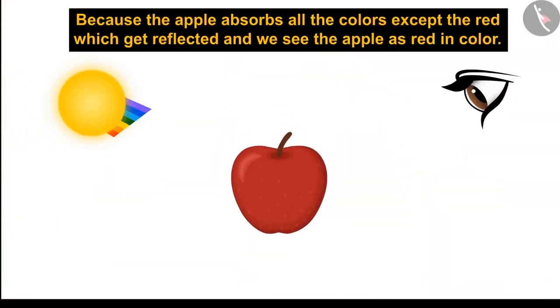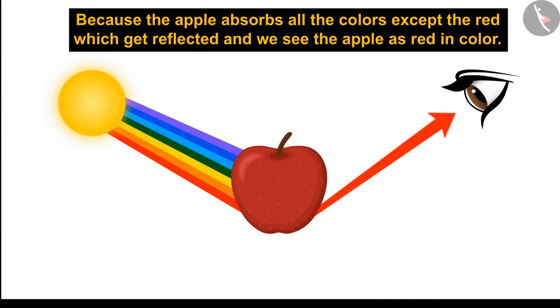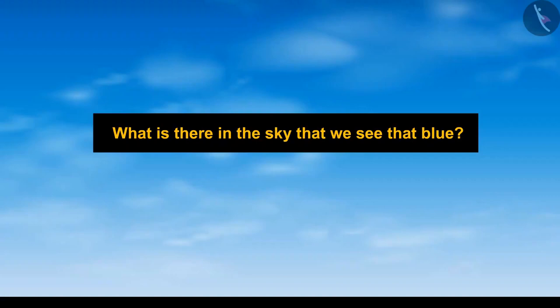So why do we see apples in red color? Because the apple absorbs all the colors except the red one, which gets reflected, and we see the apple as red in color. So what is there in the sky that it seems blue?